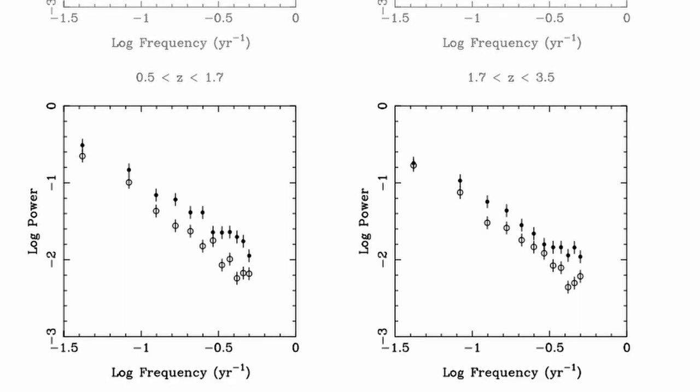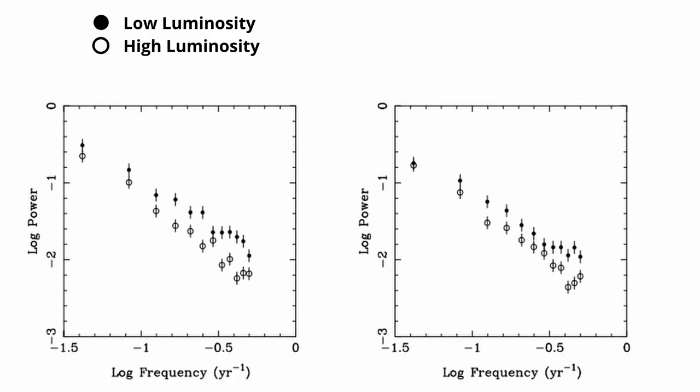The two redshift bins in the bottom two panels once more show well-defined power laws for the power spectra. In this case, it is clear that low luminosity quasars have more power on shorter timescales. This effect can also be seen by comparing the slopes of the power spectra for low and high luminosity quasars in the top two panels, and confirms that the power spectra are consistently measuring changes in timescale.